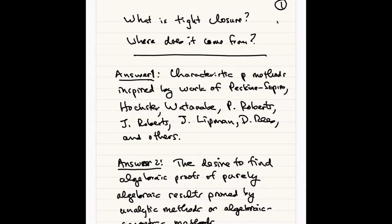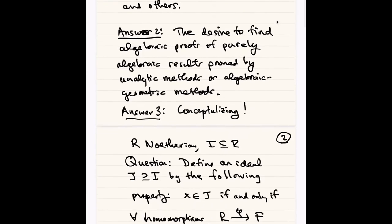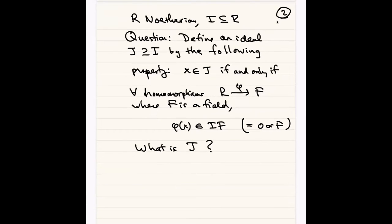So let me start not with tight closure, but with closure operations in general, because tight closure is a closure operation. Here's a question for all the students. My rings are going to be Noetherian — it's not always necessary, but it's much better to stay in that case. I is going to be an ideal inside R. To define a new ideal J which contains I by the following property: an element X is in J if and only if for every homomorphism from R to a field, the image of X is always in the image of I in that field. Of course, fields have no proper ideals, so the image is either going to be zero or the whole field. So what is J?